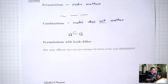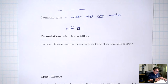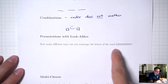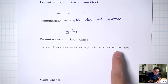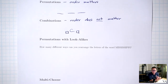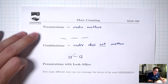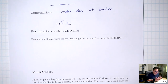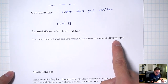Today I'm going to add two new situations. The first one is called permutations with look-alikes. The situation here is: how many different ways can you rearrange the letters of the word Mississippi? So we're talking about rearrangement — if I swap the M and the I, I get something different, so the order does matter, which is why it's called a permutation. Notice that I have I's that are repeated — one, two, three, four I's.